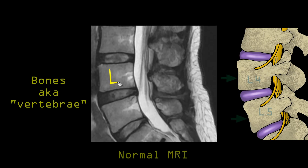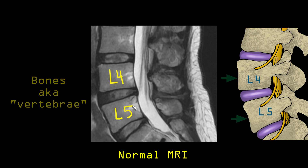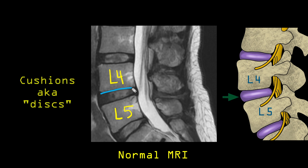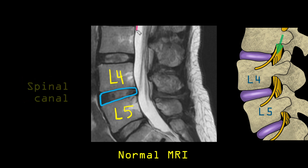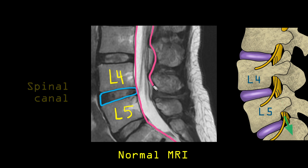Here I'm numbering the two lowest bones of the back, the L4 and the L5. Between the bones is a soft cushion called the disc which acts like a shock absorber. Behind the bones and the disc is a long tunnel called the spinal canal, which starts at the base of the skull and goes all the way into the tailbone. It is full of spinal fluid which appears white on MRI. Inside the spinal canal, you can see these fine strings which I'm outlining — each one of these strings is a spinal nerve.